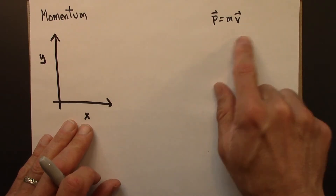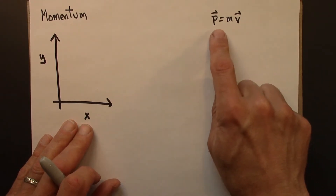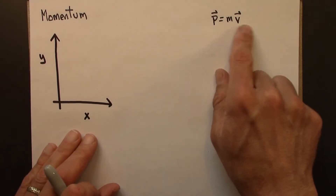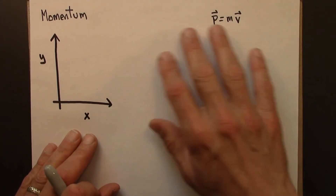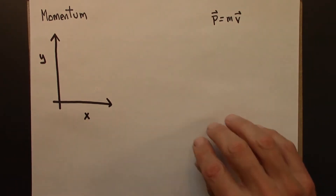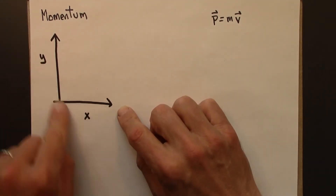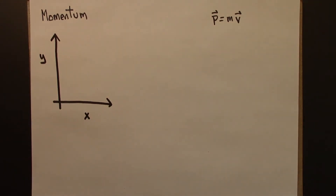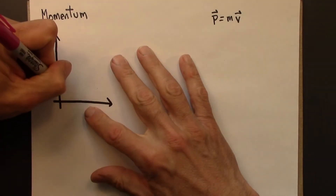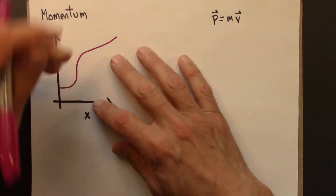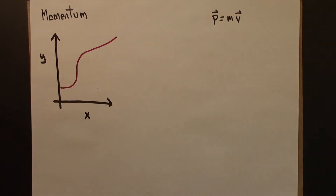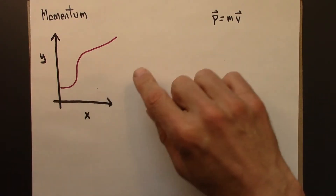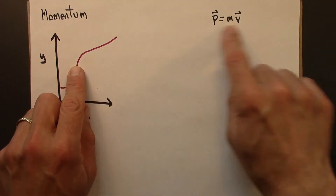We haven't worked much with vectors explicitly in this course so far, so I'll need to say a little bit about vectors in what follows. Let's start with a picture. This is space — not space-time — with x and y axes, and we might have an object that's moving through space in some sort of twisty path. Let's think about what velocity is.